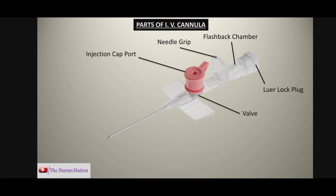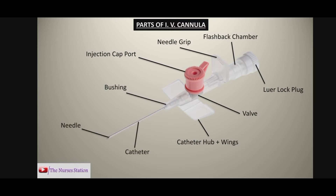Then there is the wallow, followed by the catheter hub plus the wings. These wings help to grab the IV cannula when inserting it into the vein. Then there is the bushing, then the catheter, and then the needle. The catheter is the plastic tube and has a needle inside it which acts as a stylet for insertion into the vein.